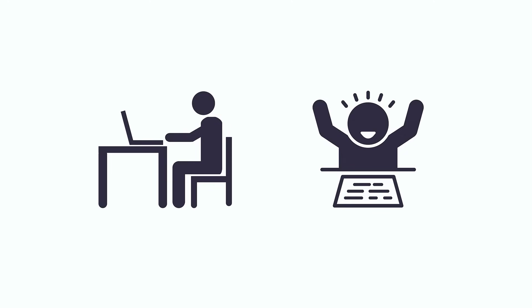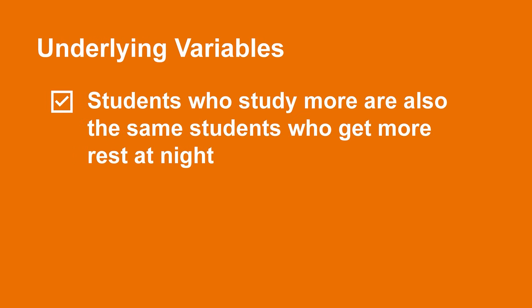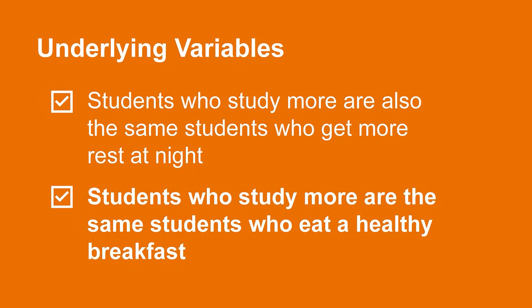Are they right? Probably. But are there other possible explanations for the correlation? Definitely. For example, there might be other underlying variables that are also correlated with our data. It could be these other factors that are causing the relationship we see. Perhaps students who study more are also the same students who get more rest at night. Or maybe the students who study more are the same students who eat a healthy breakfast. It's totally possible that the healthy breakfast, or the more hours of sleep, are the factors causing the test scores to increase. They just happen to also be correlated with studying more.